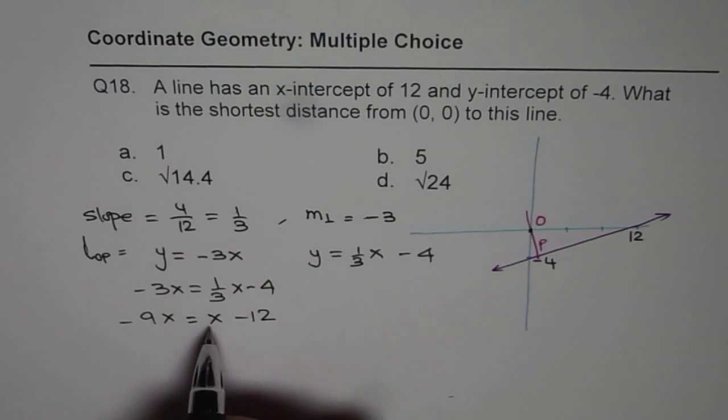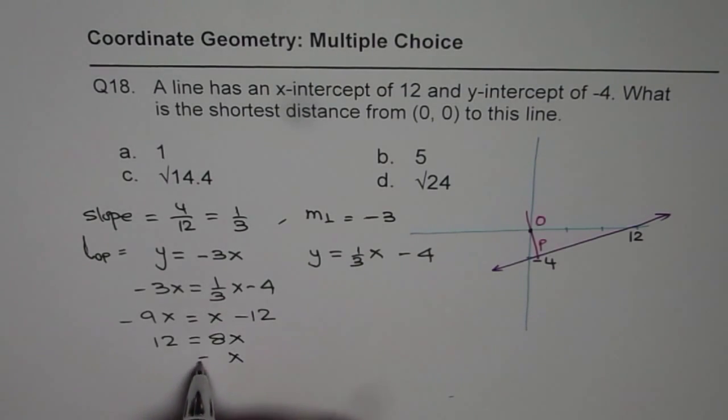We bring this on this side, so we get 12 equals 8x, and x therefore is equal to 12 over 8. Let's solve it on this side.